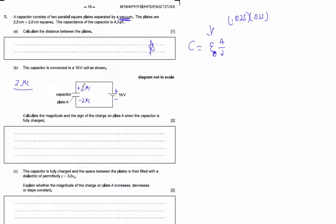And it's also not 4—it's just 2 here, 2 there. So how do you figure this out? Well, we just use C equals Q over V. V is 16 volts, and it's 4.3 picofarads. Solve for Q.